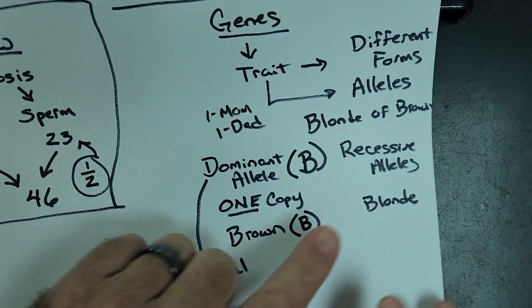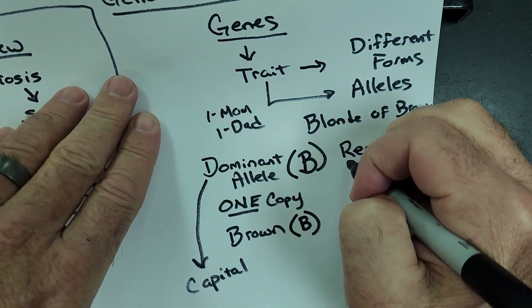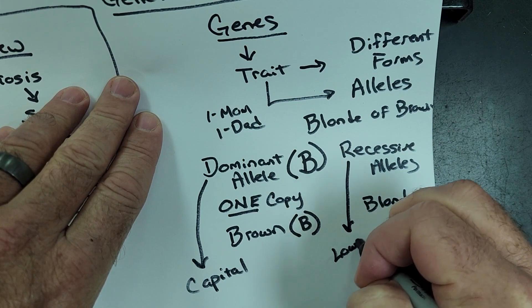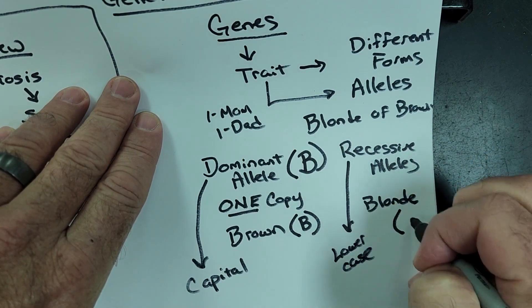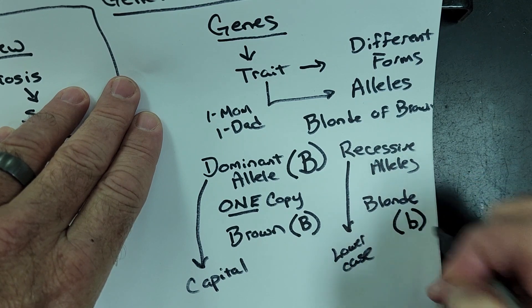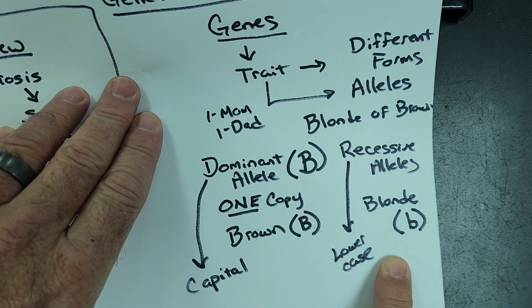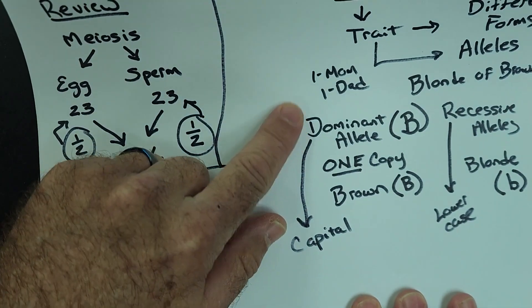Remember, a recessive allele is always written as lowercase. So in this case, we're going to use a lowercase b to represent the blonde allele.